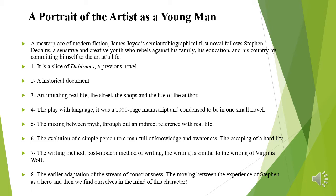The novel depicts the escaping of a hard life by Stephen Daedalus, who represents the author himself. The writing method is a kind of post-modern method, similar to that of Virginia Woolf. Last but not least, it is an early adaptation of the theory of stream of consciousness — moving between the external experience of Stephen as hero and finding ourselves inside the mind of this character.